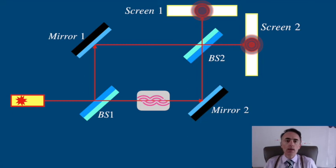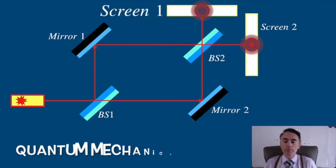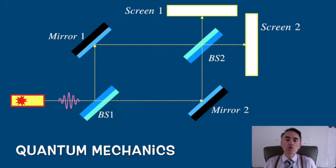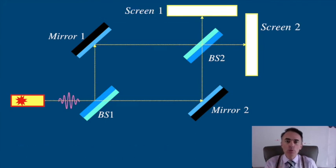It has also applications in fundamentals of quantum mechanics. If you send single photons to the interferometer, the photon will interfere with itself showing the wave-particle duality.